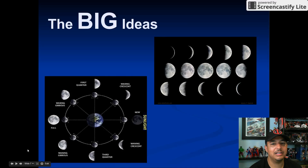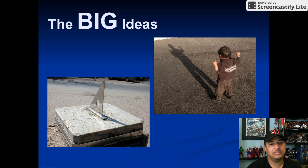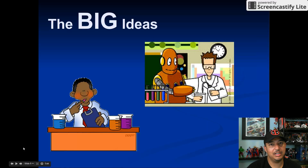So what are the big ideas of this unit? The main ones are the moon phase cycle and how the sun's shadows can be used to keep track of time during the day. If I were to pick a secondary big picture, it would be conducting scientific experiments by focusing on one variable at a time.